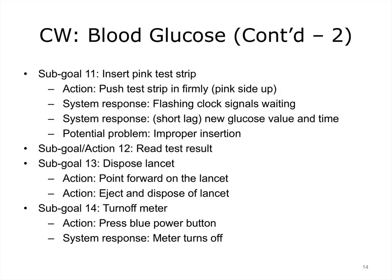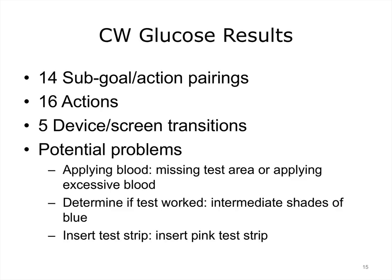Although this is a very basic task, there are quite a few steps and the process is surprisingly complex. The sub-goals continue to involve preparation to take the measurement. The system response of the flashing test strip at sub-goal 9 signals that the device is ready to take the measurement. At sub-goal 12, the test result becomes available to the user. Altogether, this most basic of tasks necessitated 14 sub-goals, 16 actions, and 5 device screen transitions. We also identified problems that may make taking the test or interpreting the results difficult for some users, with a focus on low-literacy older adults.